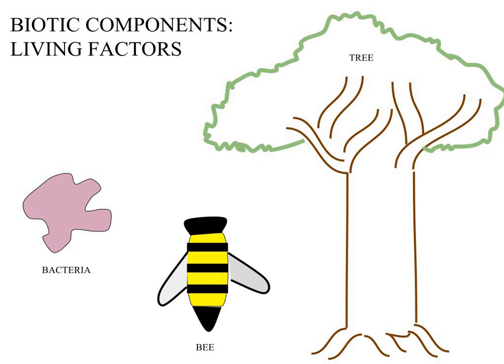Biotic components are typically sorted into three main categories. Producers, otherwise known as autotrophs, convert energy through the process of photosynthesis into food. Consumers, otherwise known as heterotrophs, depend upon producers for food. Decomposers, otherwise known as detritivores, break down chemicals from producers and consumers into simpler form which can be reused.